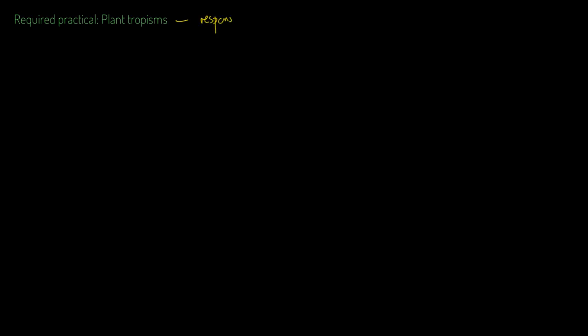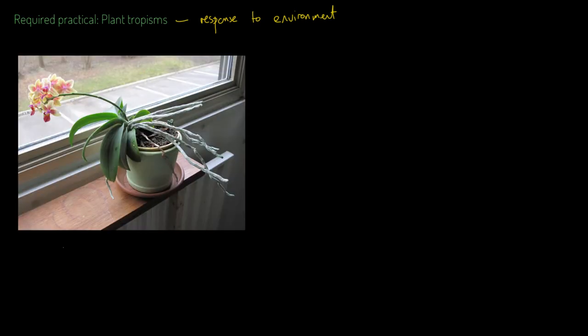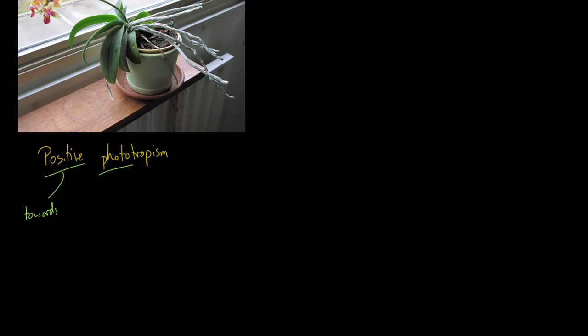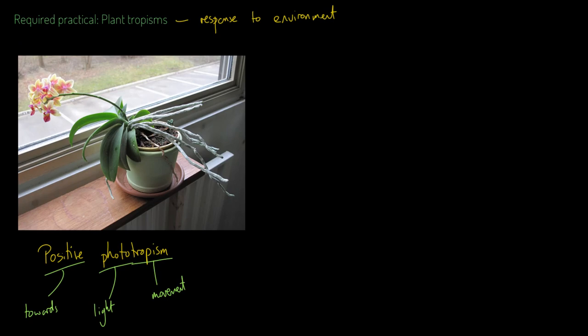Let's talk about this required practical to do with plant tropisms. A tropism is a response and movement to the environment. This plant here, for example, is showing positive phototropism. Positive meaning towards, photo meaning light, and tropism is that movement response. So this plant is moving towards the light, trying to maximize the light it gathers through photosynthesis.